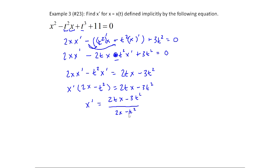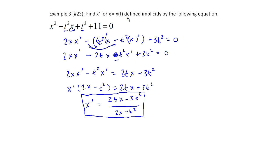Now I divide both sides by (2x - t²) to get x prime = (2tx - 3t²) / (2x - t²). Checking for common factors, I don't see anything to cancel — the t² isn't a factor of everything — so this is my final answer. Once again, pay attention to what variable you're working with and what it's written in terms of. When I say x prime, I mean dx/dt, so the derivative is with respect to t — and that's what's driving everything you see happening here.